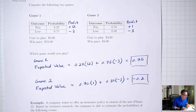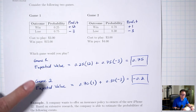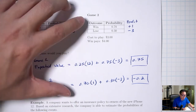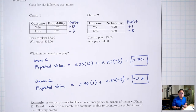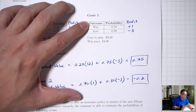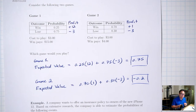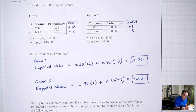Where would you play these games in real life? One example would be a casino. A casino basically has game two — you win more frequently, there are bells and whistles and sounds that make you feel good, but each time you win you're not winning a lot. So in the long run, the longer you play, on average you're losing money each time, which is how the casino makes money.